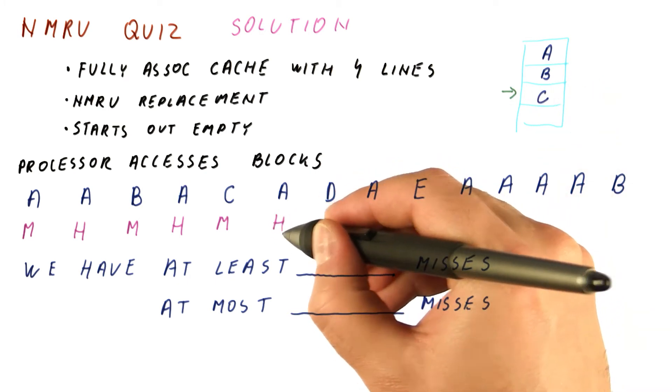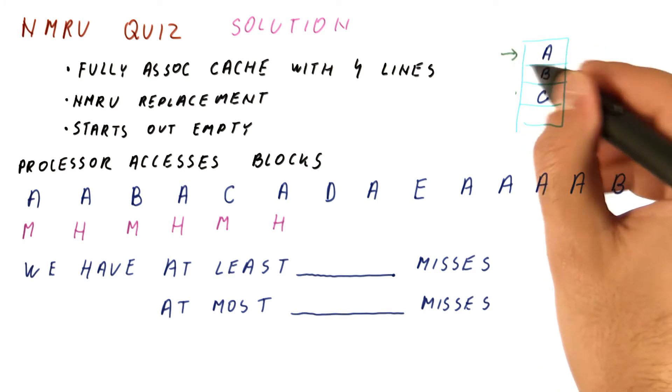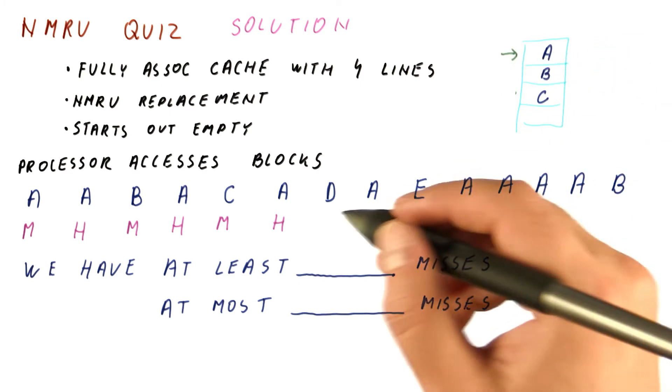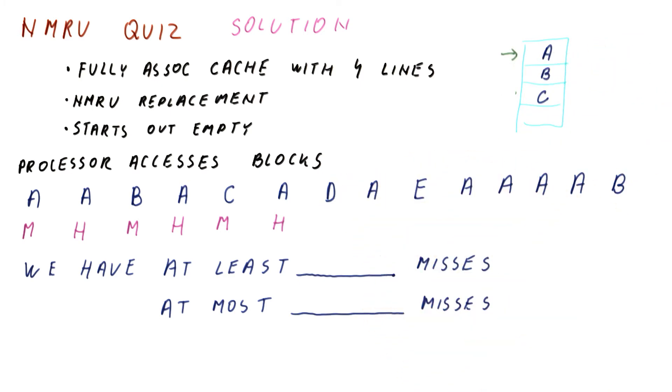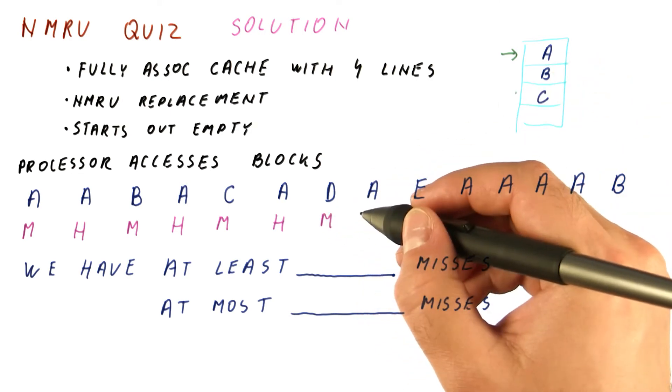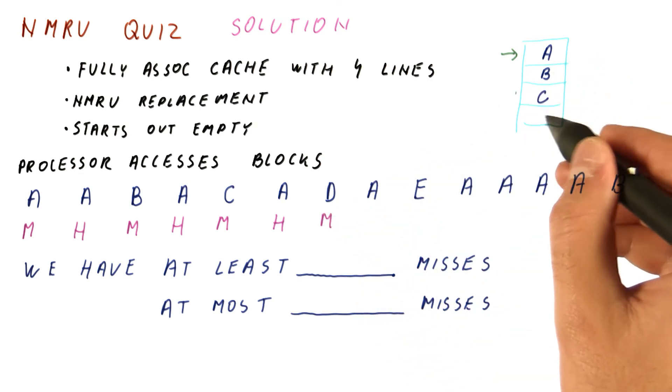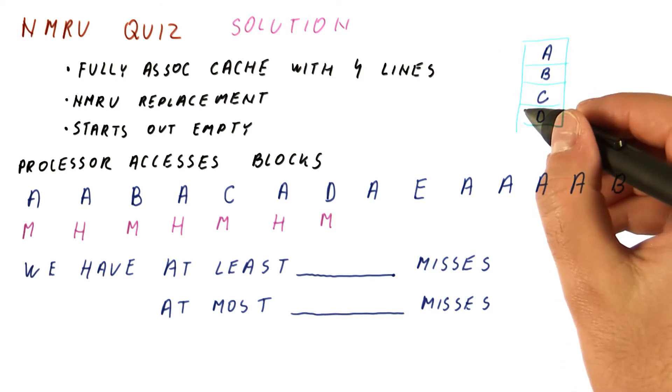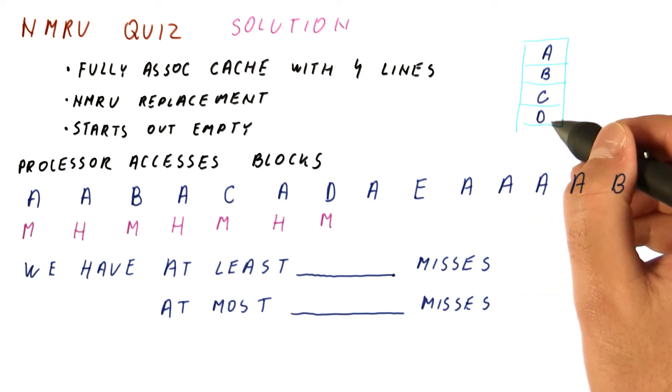A is now a hit, and that is now the most recently accessed line. Now when we access D, it's not in the cache. So we will have a miss. We will again put D in an unused place. And that will now be the most recently used one.